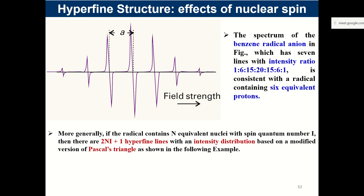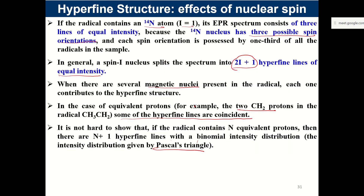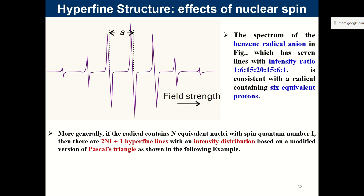A typical example is the EPR spectrum for the benzene radical anion. You can see clearly here that with six equivalent protons, you get n + 1 = 7 hyperfine lines — one, two, three, four, five, six, seven — and the intensity follows the Pascal's triangle pattern. This is the same stick model we followed for NMR, and we get the same Pascal's triangle intensity distribution.